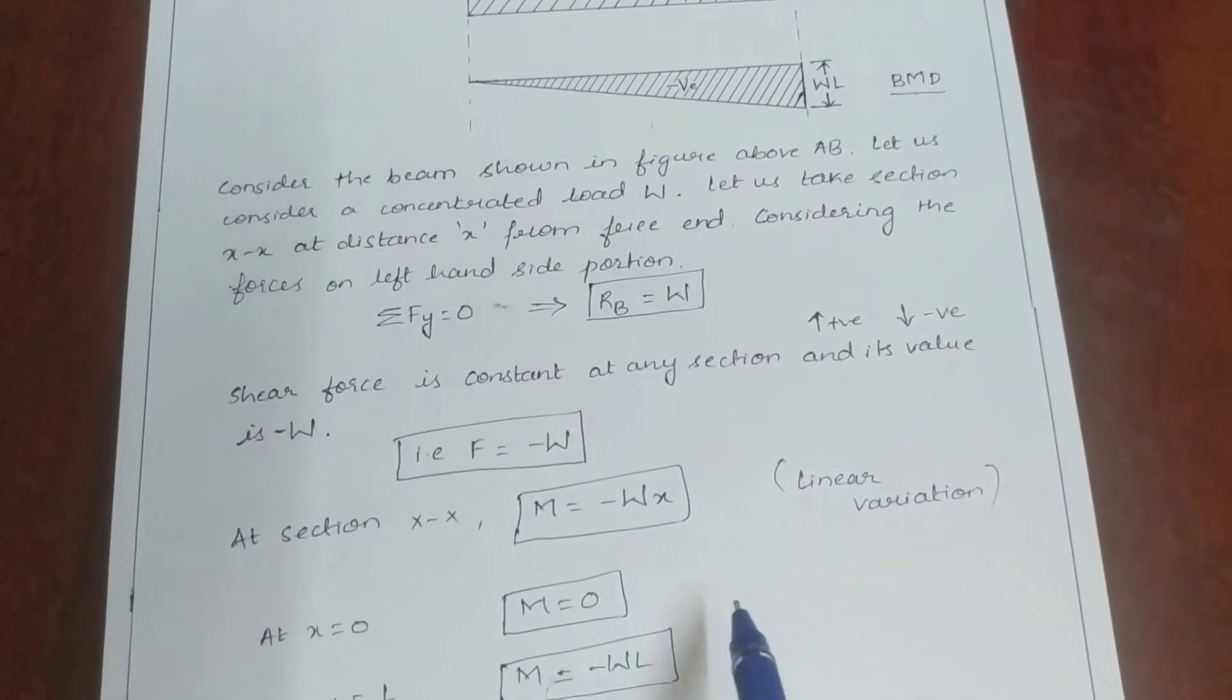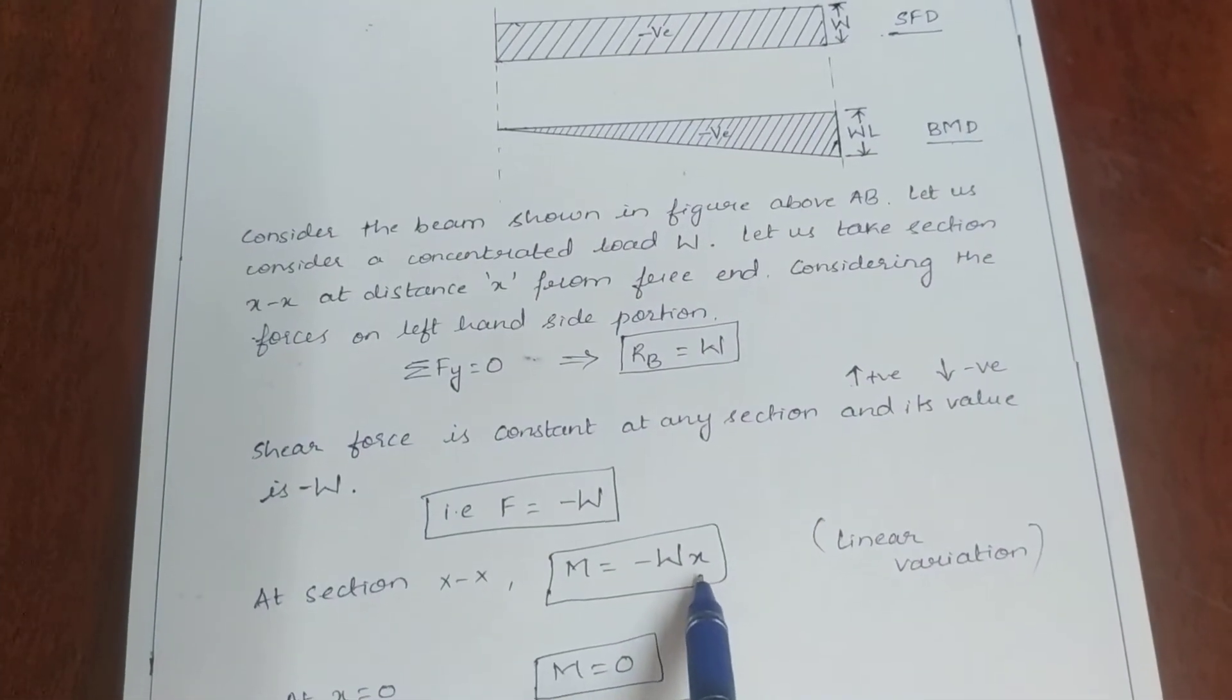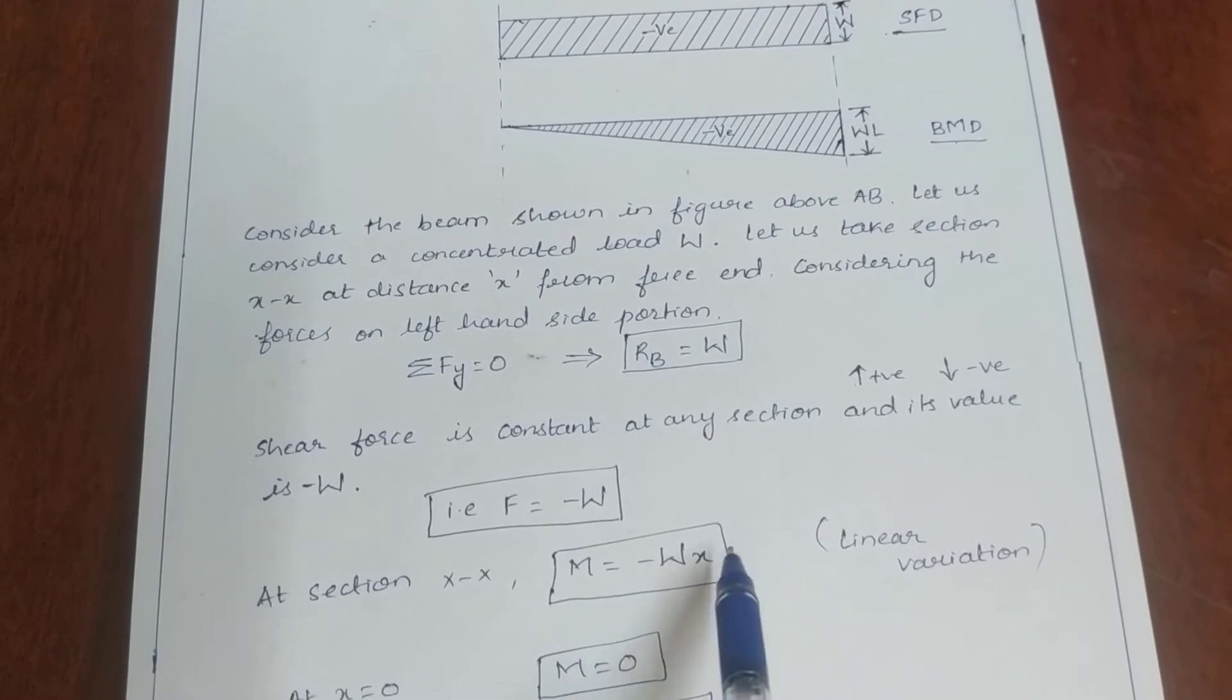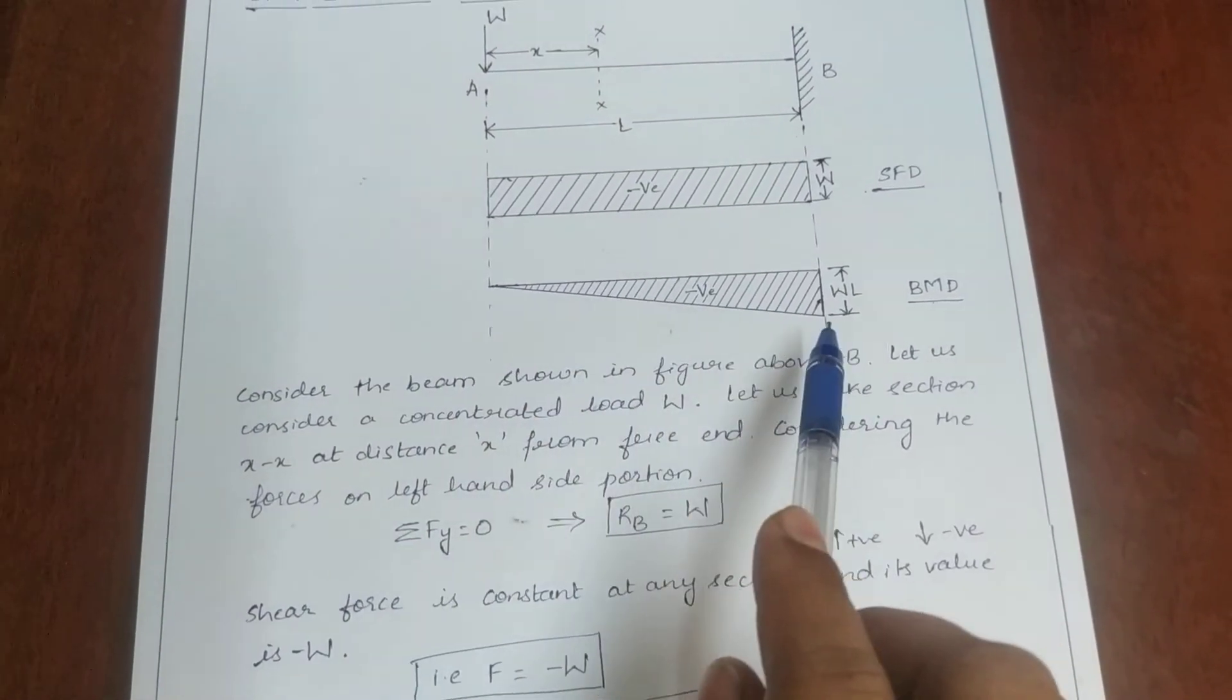Since we are multiplying here the force into distance, and we are getting only one distance term, that is only X, we have to draw the linear variation like this.